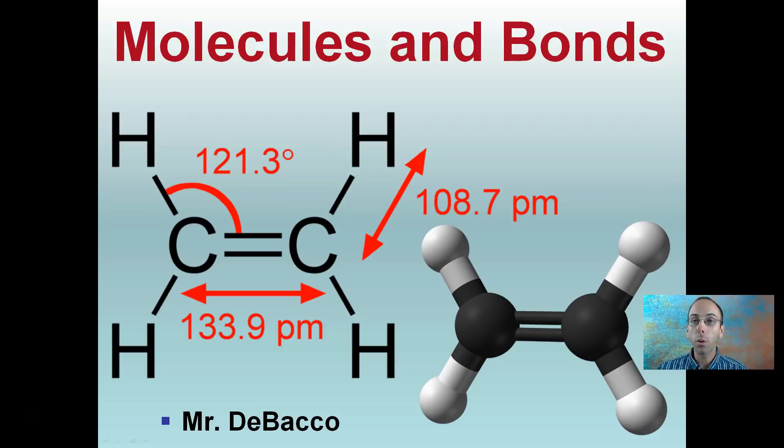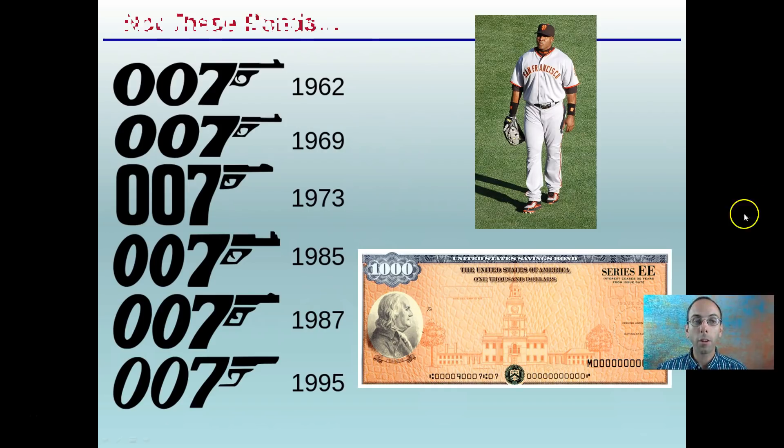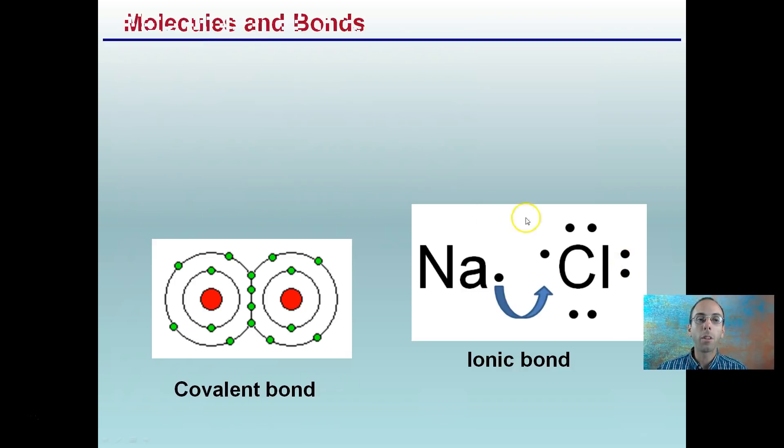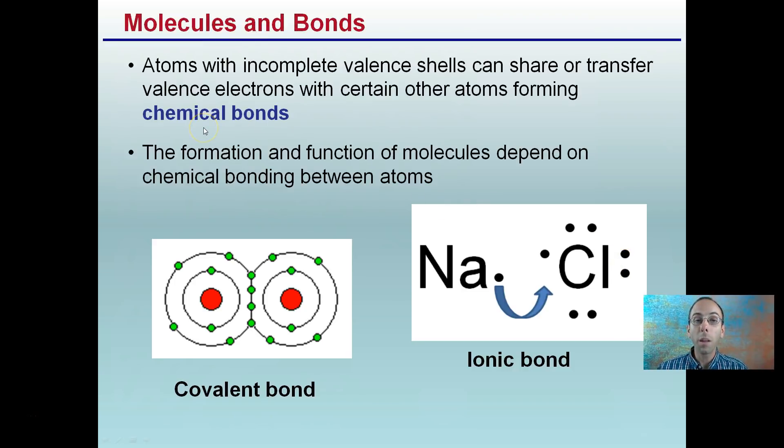Okay, here we're going to be looking at molecules and bonds. I see a couple examples presented here. Now, when I say the word bonds, we're not talking about James Bond, we're not talking about Barry Bond, we're not talking about municipal bonds. We're talking about, of course, chemical bonds. So what are chemical bonds?